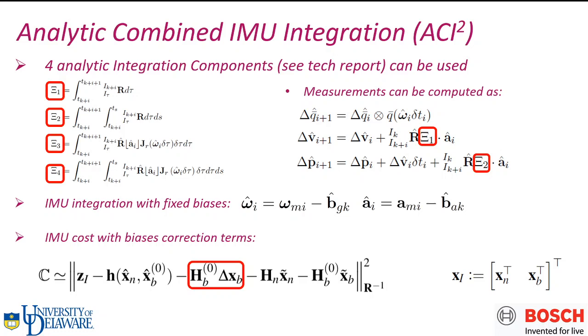How to compute them? We identify four analytic integration components. We have provided analytical derivations for them in our tech report. After evaluating them, you can easily plug them in the measurement, the transition, and the noise Jacobians. All the computations will be greatly simplified.